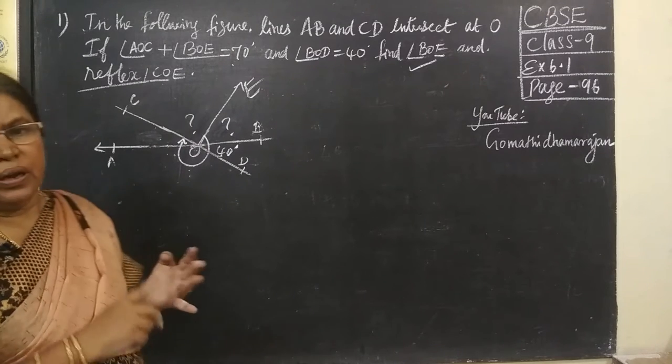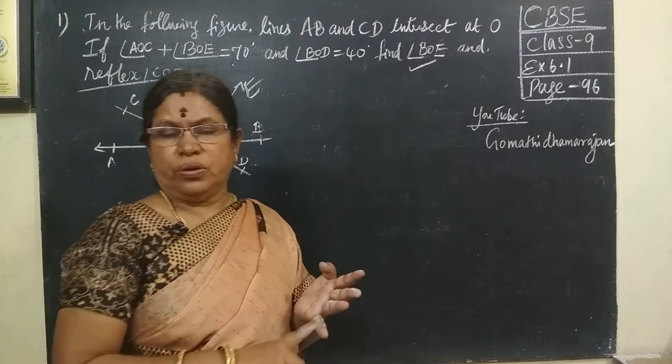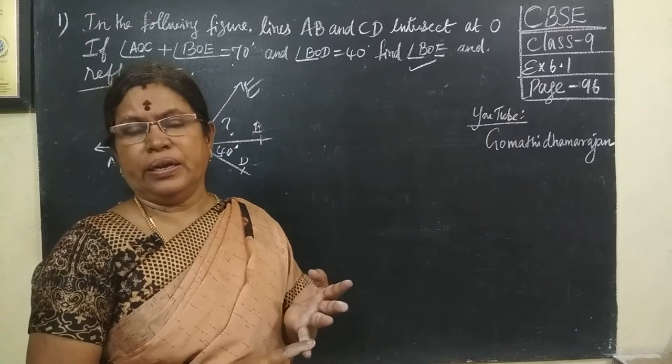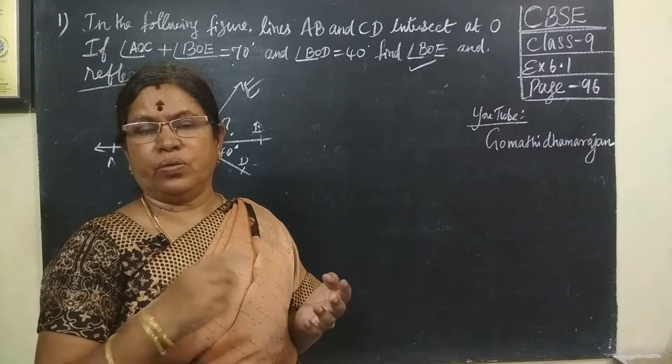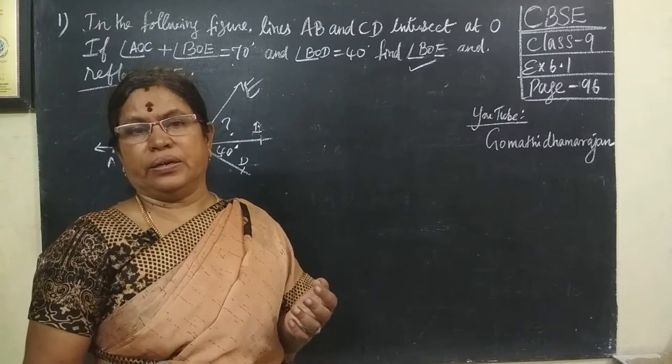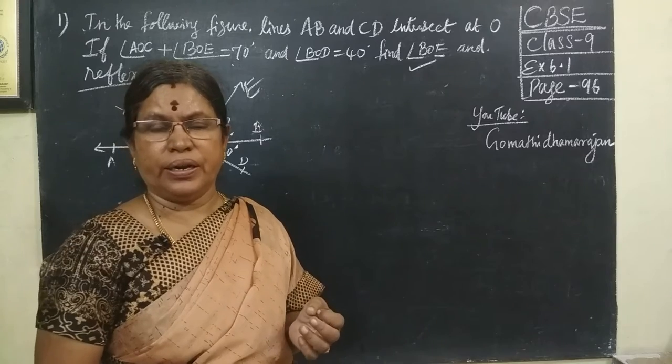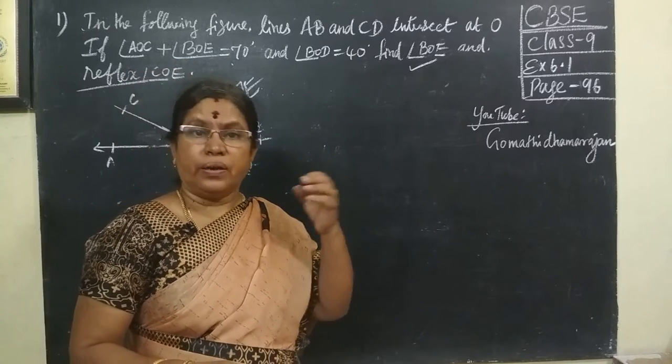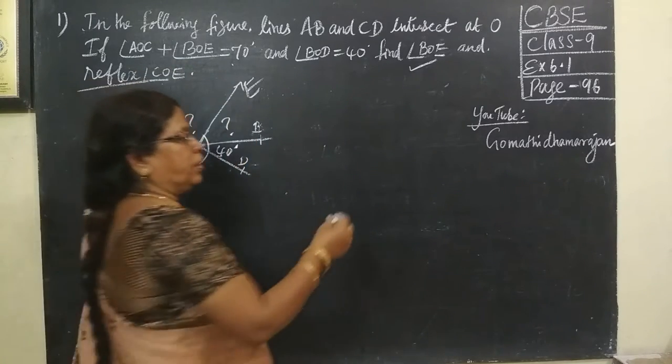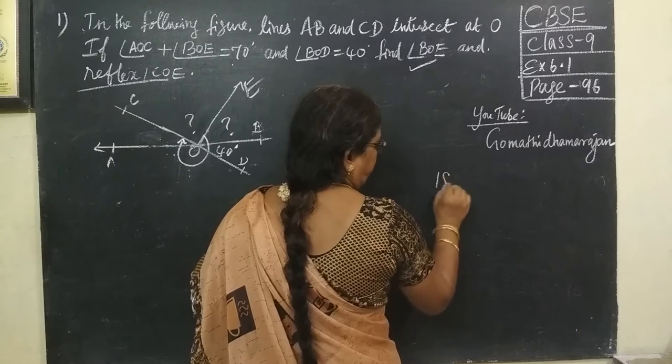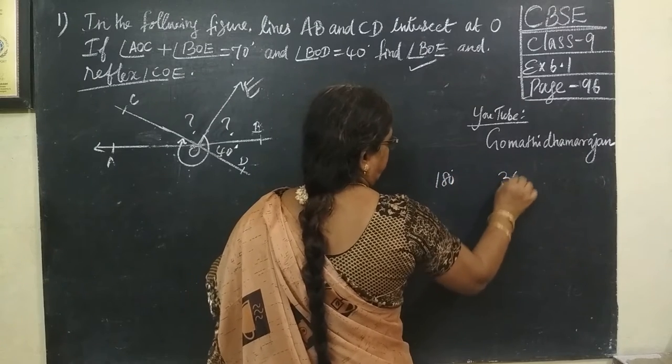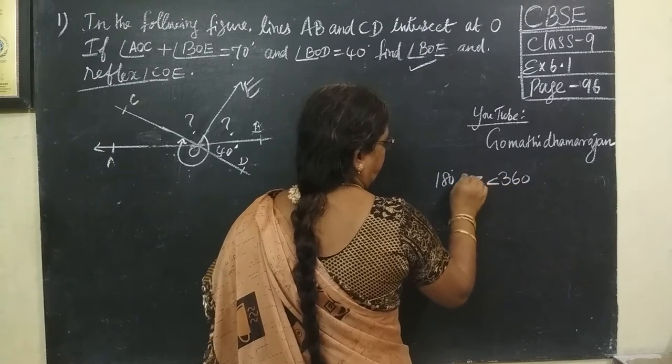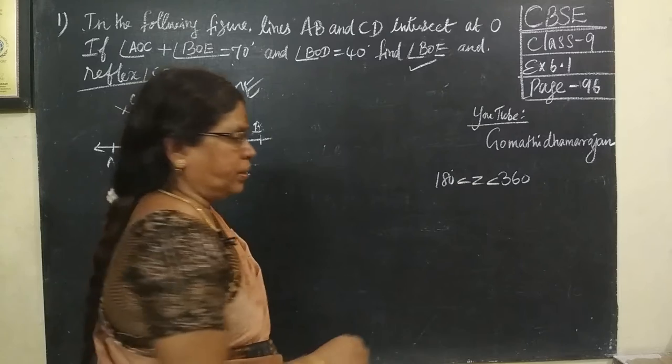You know acute angle is between 0 to 90 degrees. Then obtuse is 90 to 180. Straight angle means exactly 180 degrees. And Reflex angle means it lies between 180 to 360.